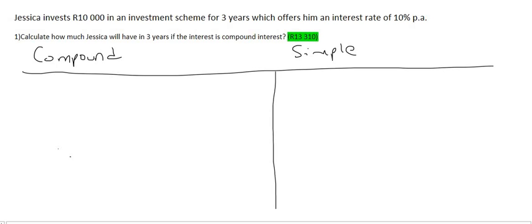So let's compare. Let's do compound over here and then we'll do simple over here. So Jessica has 10,000 Rand and she's going to earn interest of 10% PA or per annum, which means per year. So for the first year she'll earn 10% of however much she has and she has 10,000 Rand.